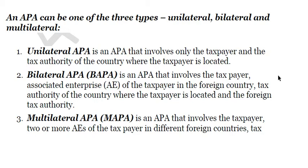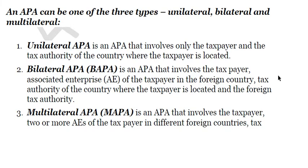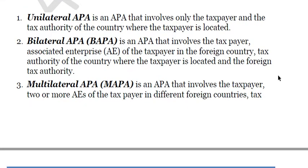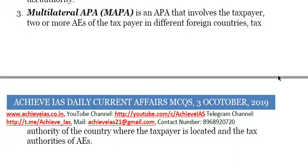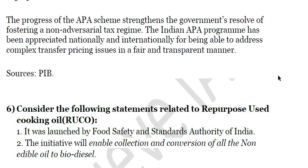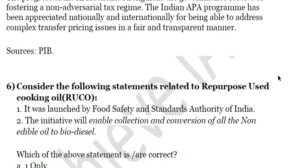The APA provides certainty with respect to the tax outcome of the taxpayer's international transactions. It can be of three types: unilateral — involving the taxpayer and the tax authority of the country where the taxpayer is located; bilateral — also involving a foreign tax authority; and multilateral — which expands the scope beyond bilateral.